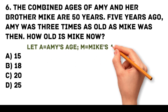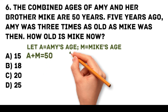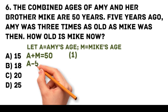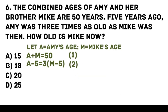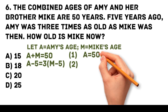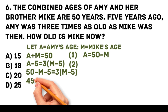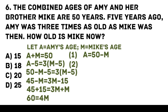Let A be Amy's age and M be Mike's age. The combined ages give A plus M equals 50 — this is the first equation. Five years ago Amy was 3 times as old as Mike, so A minus 5 equals 3 times (M minus 5) — the second equation. Substituting A equals 50 minus M: 50 minus M minus 5 equals 3 times (M minus 5). By distribution: 45 minus M equals 3M minus 15. Combining terms: 60 equals 4M, so M equals 15. Mike is 15 years old.